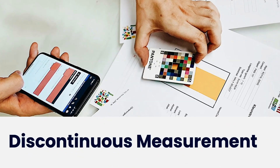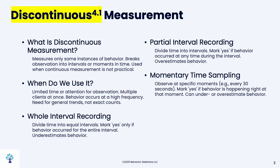Hi everyone and welcome back. We're going to talk about discontinuous measurement. This is different than continuous in that we're sampling the behavior — we're not seeing all instances of behavior. It's measuring a couple instances of behavior. You break the observation into intervals or moments in time. We want to use this when continuous measurement is not practical and you might have time constraints.